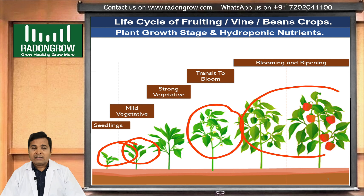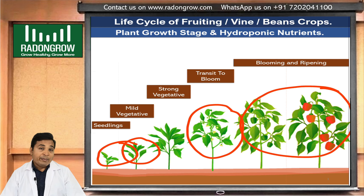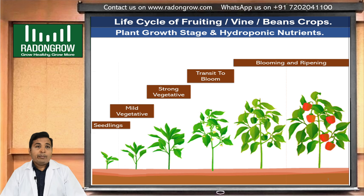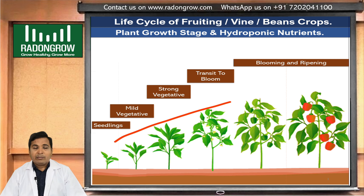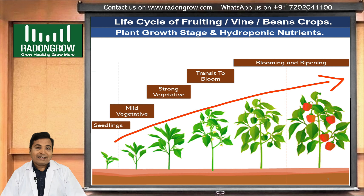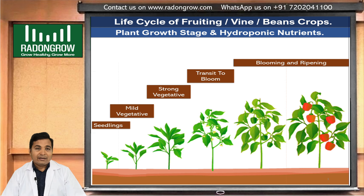In all stages, we can change the nutrient to get maximum production. But for hobby purposes, it may not be required — we can follow a simple multiple mixture solution. Thanks again, Rajnikan Sadani from Redone Grow.